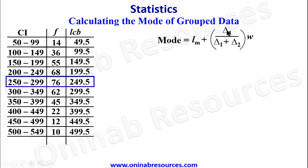We can then go ahead to calculate delta 1, delta 2 and our w. Our delta 1 is the positive difference between the frequency of the modal class and the frequency of the class before it, which is 76 and 68. So we find the positive difference, which is 76 minus 68, which gives 8.